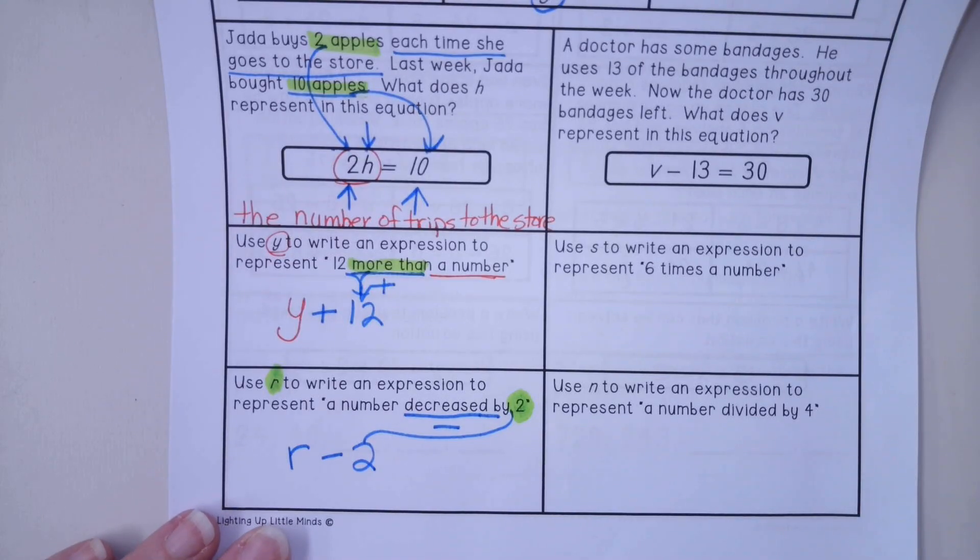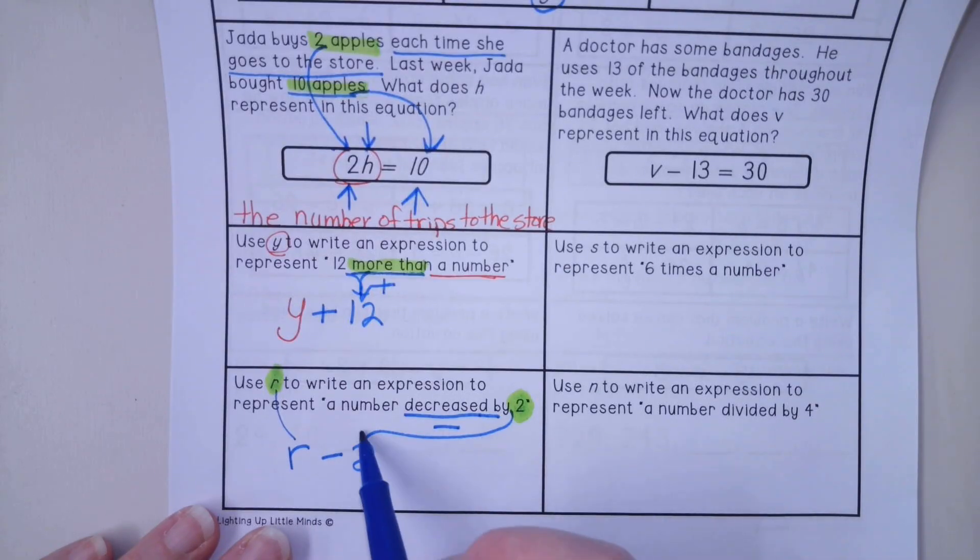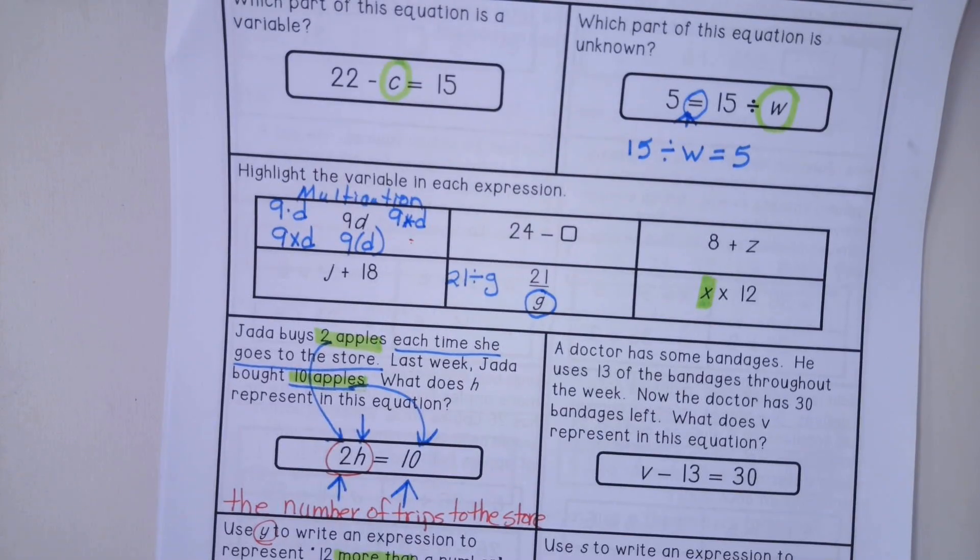Now this is not an equation. It's an expression. They're only asking us for the expression. So here's our R. Here's our number 2. And here is our word for decrease. So you're on your own for the rest of that homework. Good luck, everyone. Have a great night.